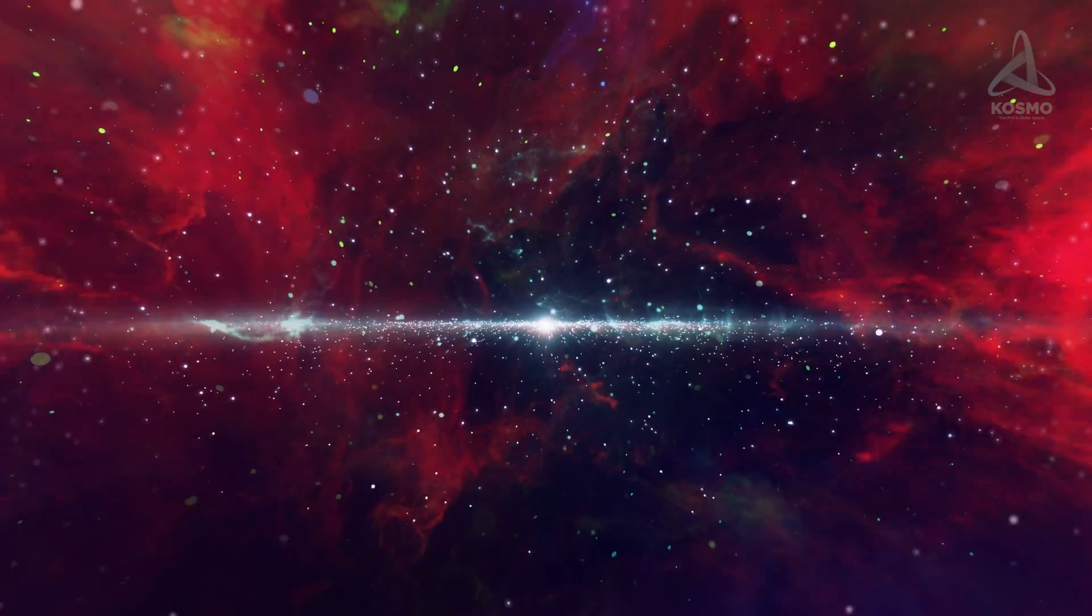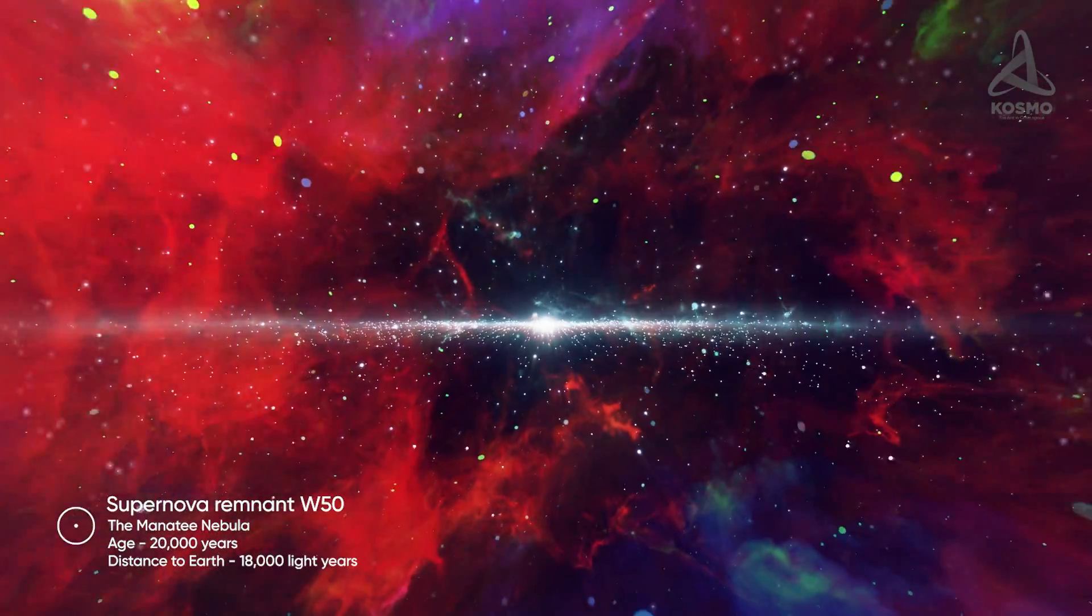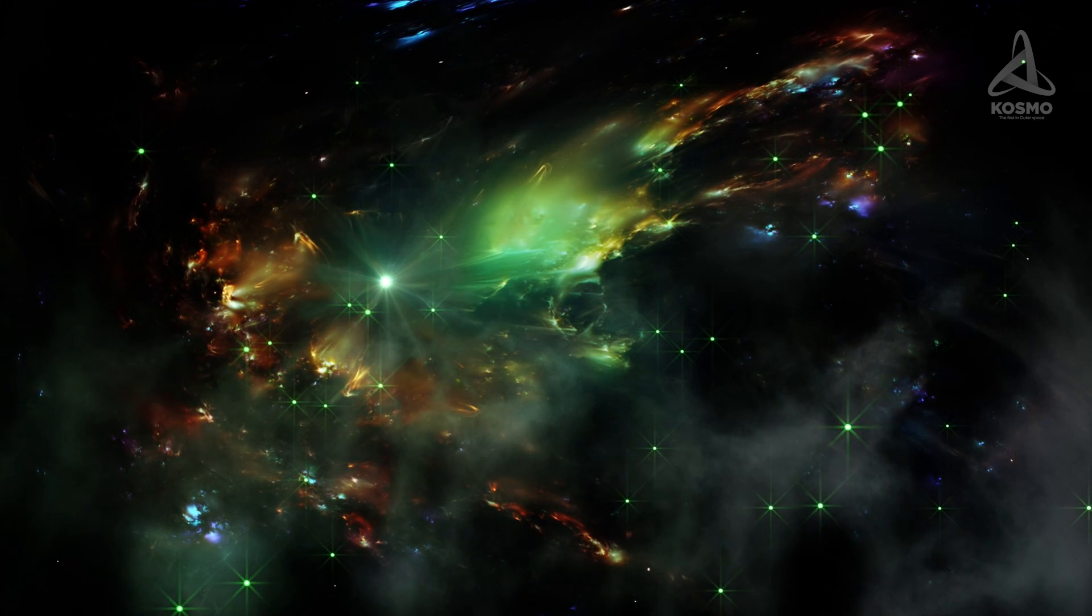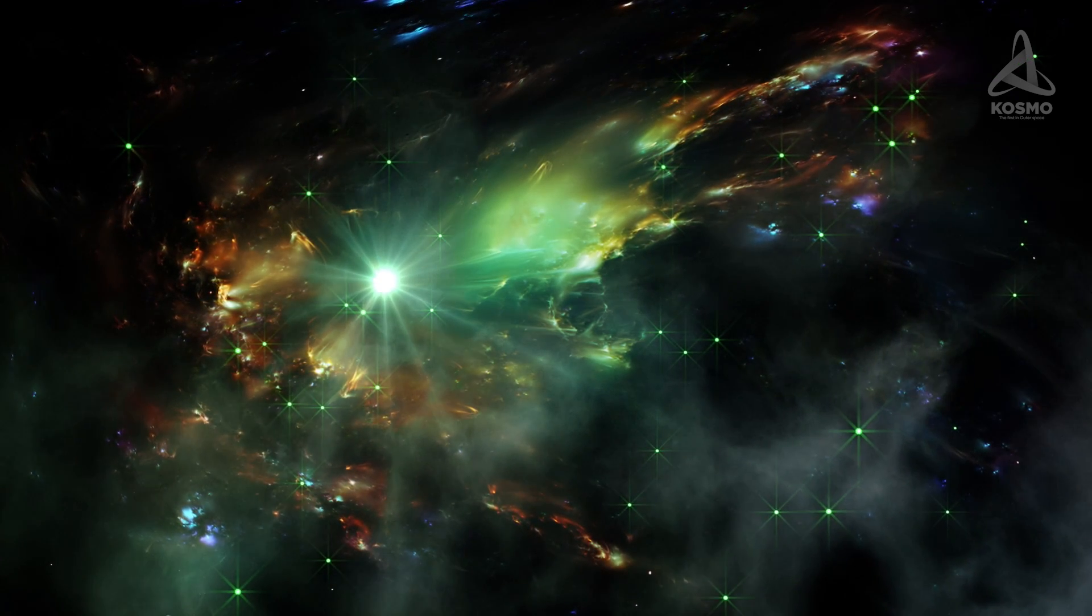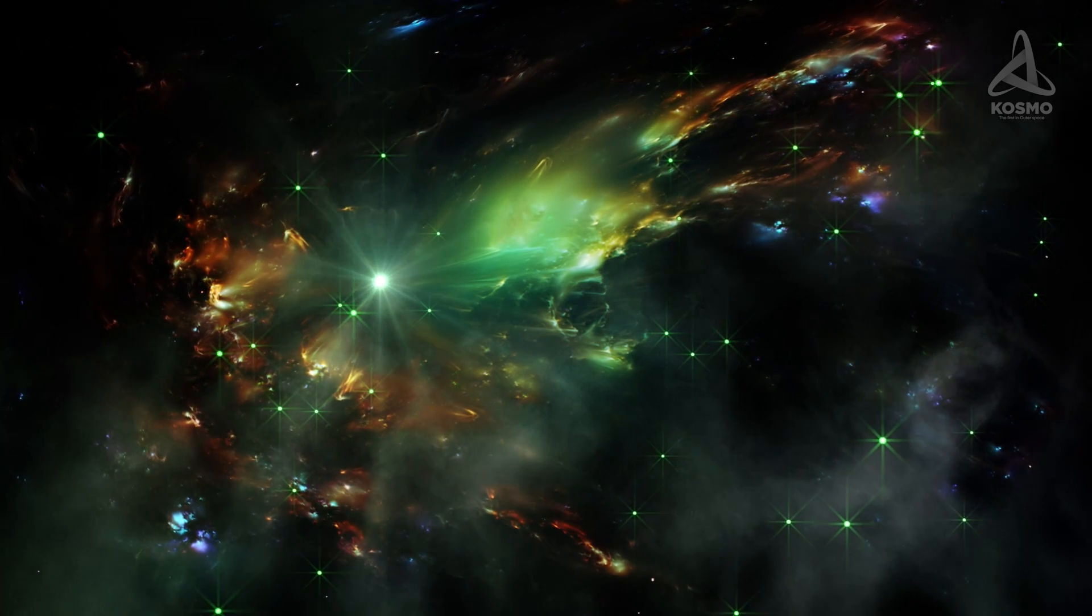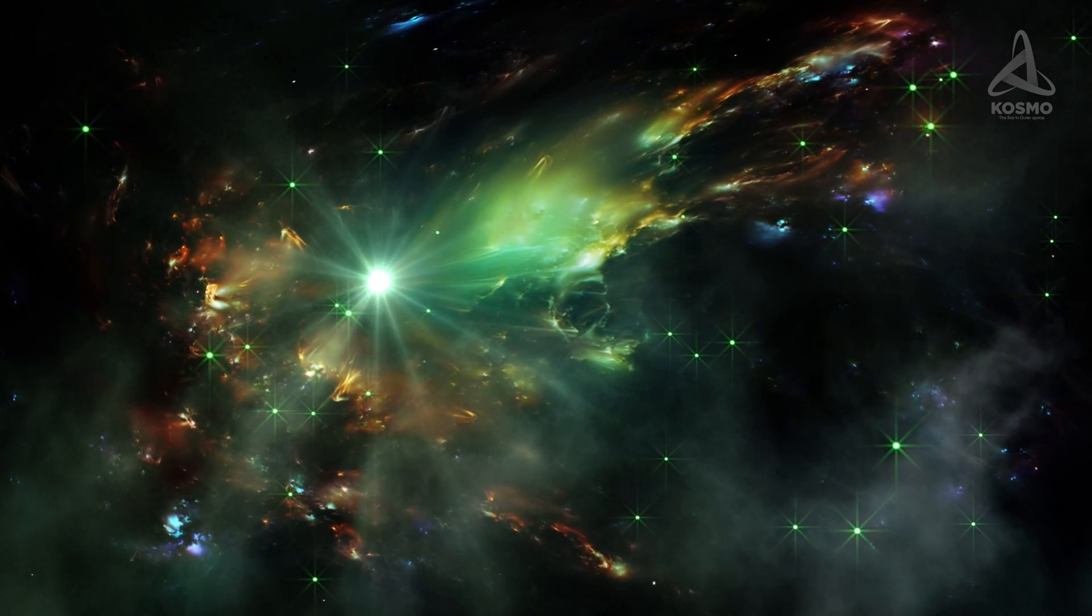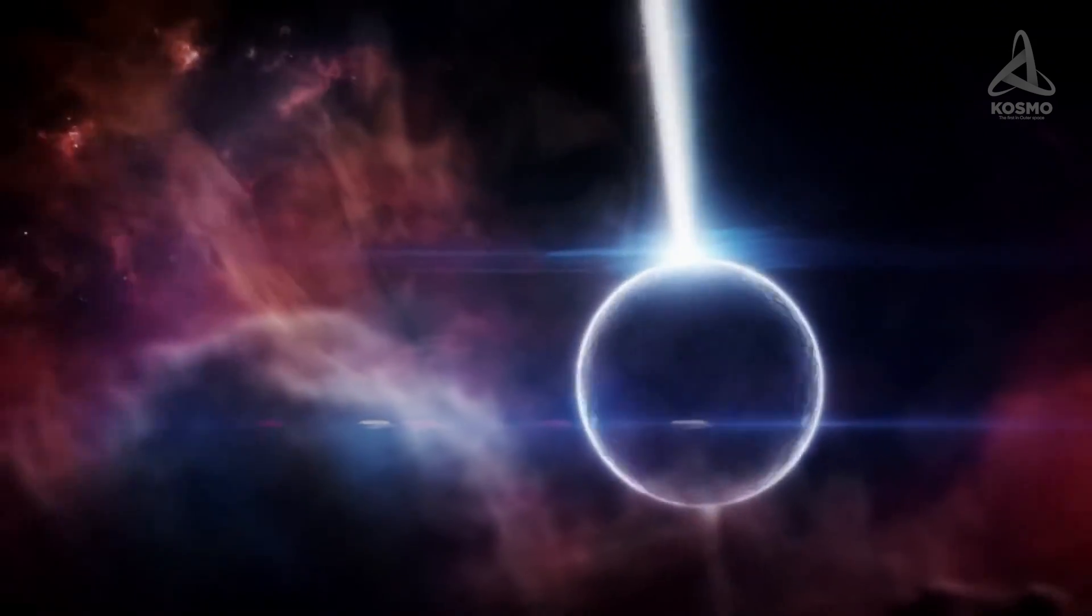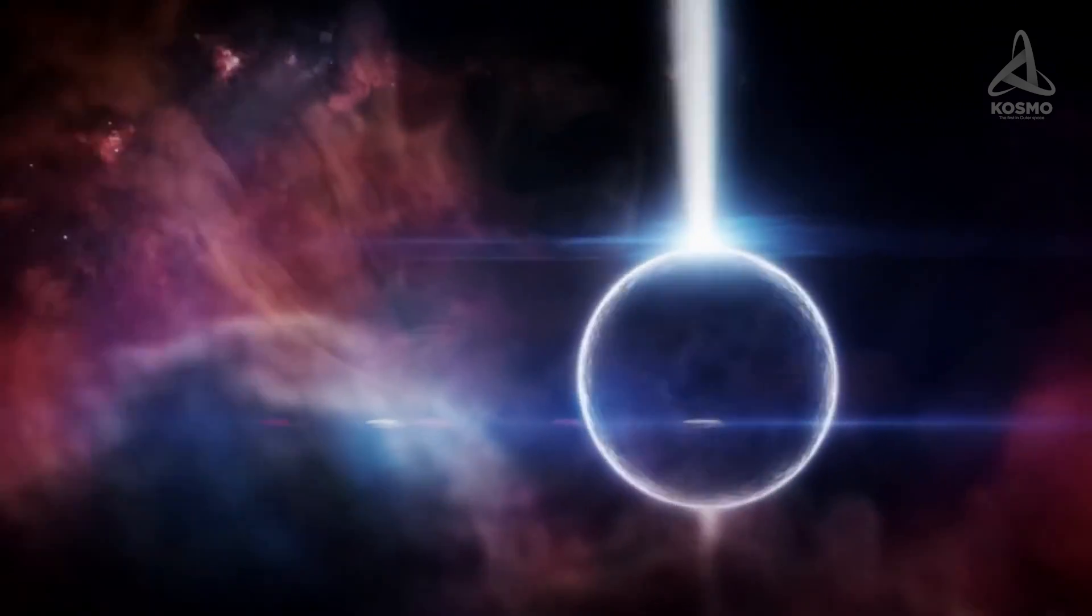SS433 is located within the supernova remnant W50, sometimes also called the Manatee Nebula. The age of this nebula is estimated at approximately 20,000 years. And the distance between the nebula and the Earth measures about 18,000 light years.